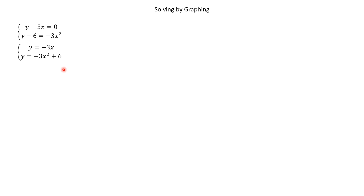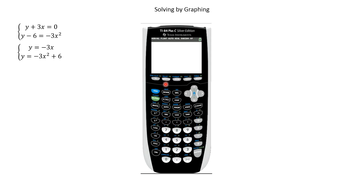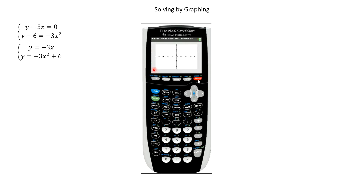When solving by graphing, the equations should be easy to put into y = form, and you should use a graphing calculator. Pull up the calculator, go to y equals, type in −3x in the first equation and −3x² + 6 in the second, then graph it. The first one is a line and the second is a quadratic, and we can see two intersection points.